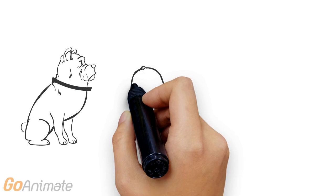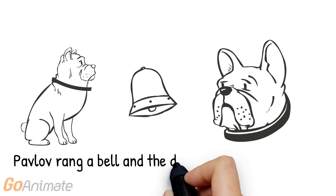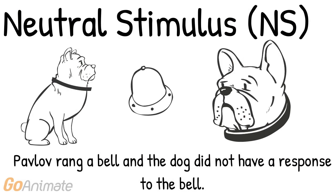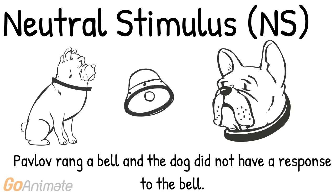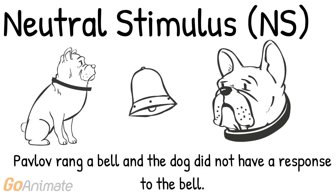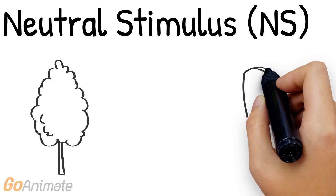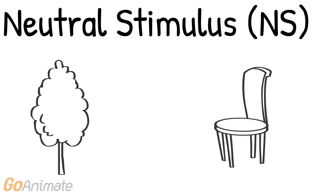Pavlov rang a bell in front of the dogs in his study, and the dogs did not have a response to the ringing bell. The bell at this point is a neutral stimulus, or NS — a neutral stimulus does not produce a response. For example, if I see a tree outside and don't pay much attention to it, that's a neutral stimulus. If I see a chair at a cafe and don't react much to it, that would also classify as a neutral stimulus.